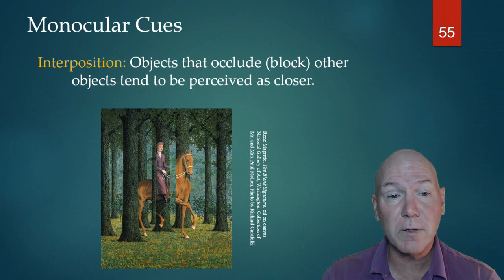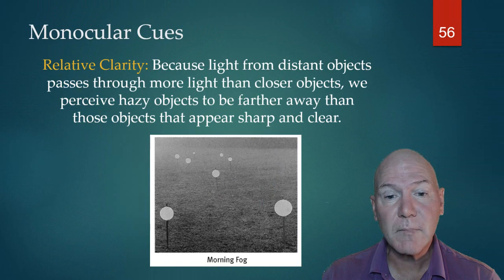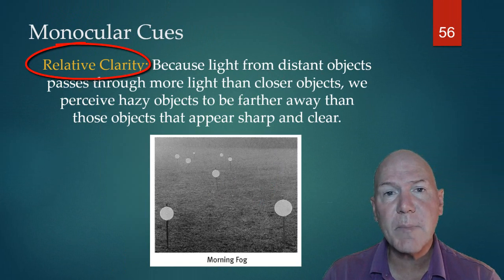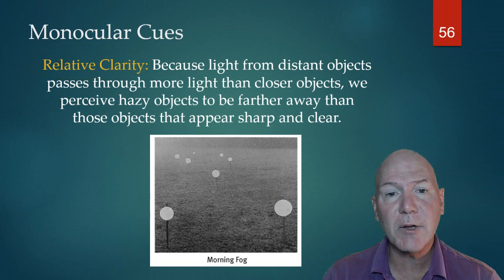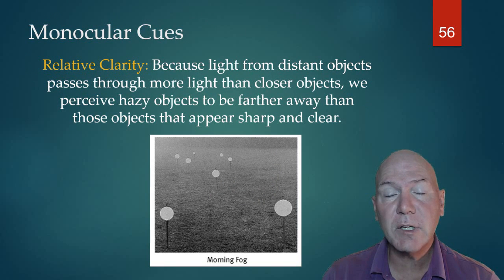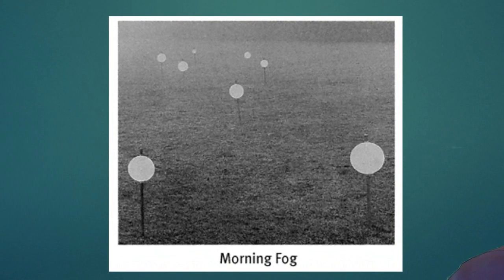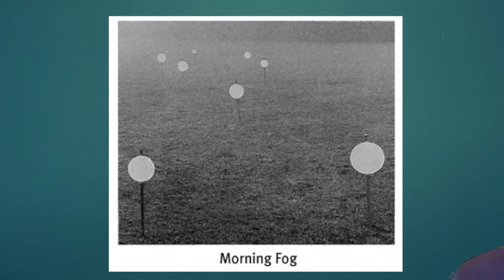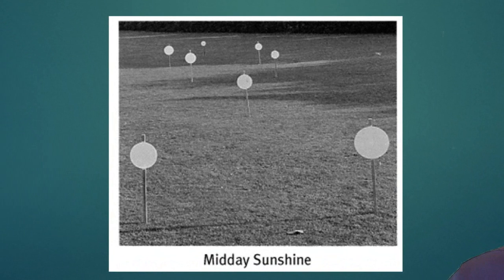Another one is relative clarity. Usually something in the distance has to pass through far more light molecules and a haze is kind of created. So what our brain has learned is that things that are clearer tend to be closer. If you look at this picture and we clear up the fog here, you'll see magically these lights appear to be closer. See that again? Far away, closer, even though they're the same.